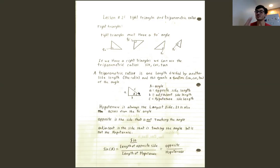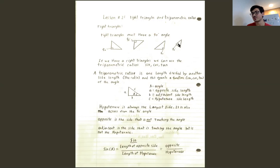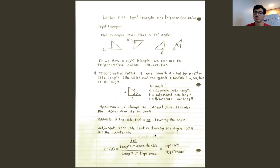Generally the hypotenuse is your diagonal line, but sometimes — like on the last triangle up here — the hypotenuse is actually the straight line, since it's the longest one across from the 90-degree angle. So the hypotenuse is always the longest side and always across from the 90-degree angle. The opposite is not touching the angle at all, and the adjacent is touching the angle but is not the hypotenuse. We're going to look at sine today, then cosine and tan next lesson.